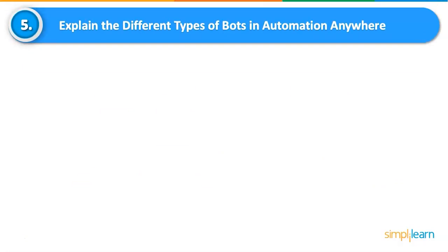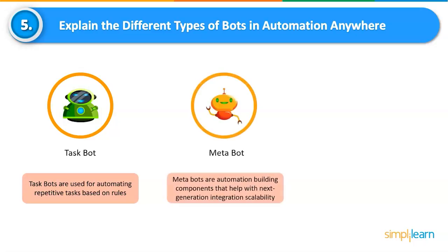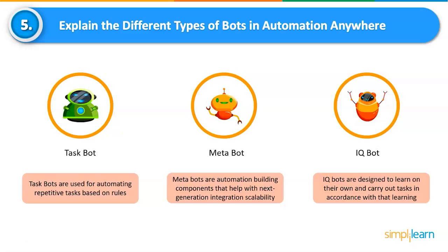Explain the different types of bots in Automation Anywhere. Task Bots are used for automating repetitive rule-based tasks; they are simple to create and benefit areas like Document Administration, Claims Management, HR, and IT. Meta Bots are a more advanced version of Task Bots, serving as automation building components that help with next-generation integration scalability for complex processes. IQBots are the next generation of intelligent bots — with the ability to think like humans, they learn on their own, recognize patterns, and improve with each human confirmation.